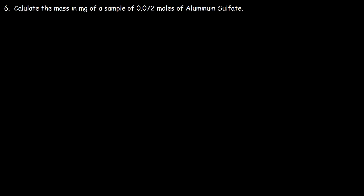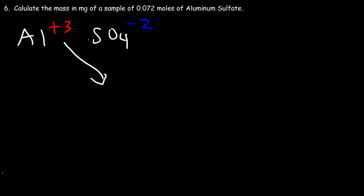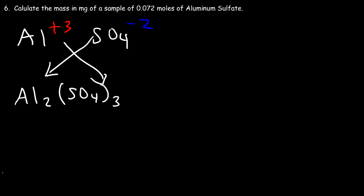Here's another one to try: calculate the mass in milligrams of a sample of 0.072 moles of aluminum sulfate. First, we need to write the chemical formula of aluminum sulfate. Aluminum is in group 13, so it has a +3 charge. Sulfate is a polyatomic ion — SO₄²⁻. We swap the charge magnitudes as subscripts: the formula is Al₂(SO₄)₃. Whenever you have multiple polyatomic ions, enclose them in parentheses.